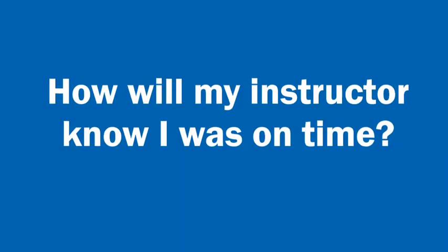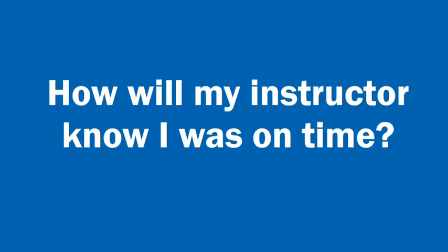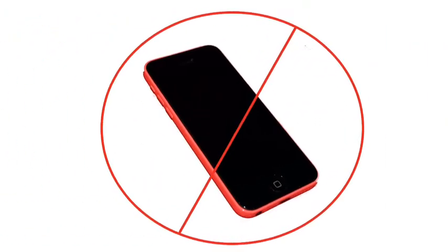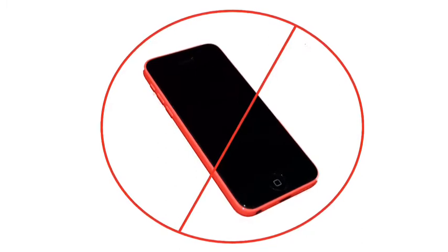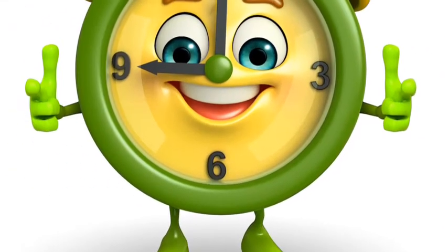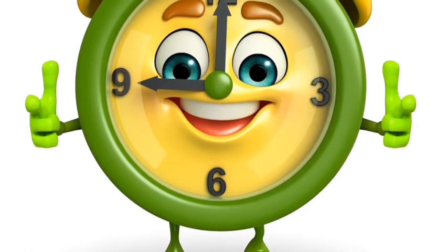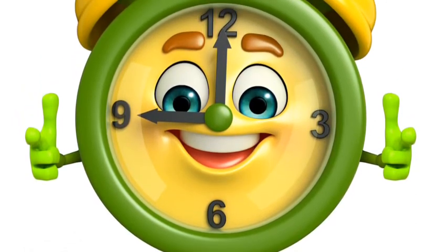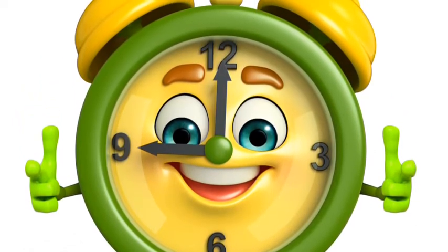How will my instructor know if I made it to my shift on time? Your instructor will provide you the phone number which you need to call from the ambulance base landline. Any calls made from your cell phone won't be accepted. Always be sure to clock in and out, and don't forget to state how many patients you saw that day.